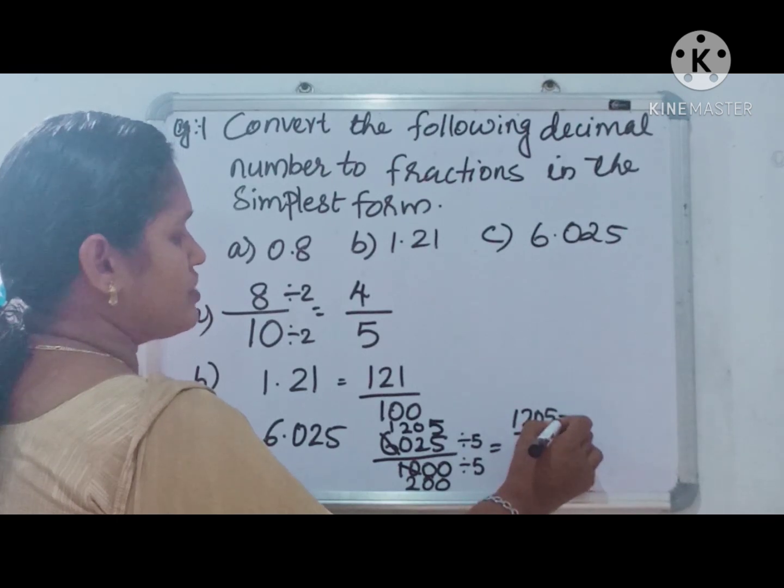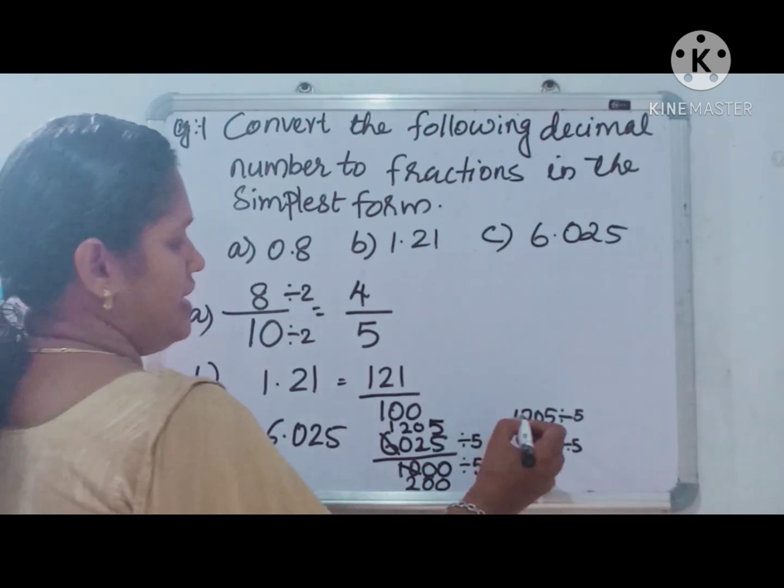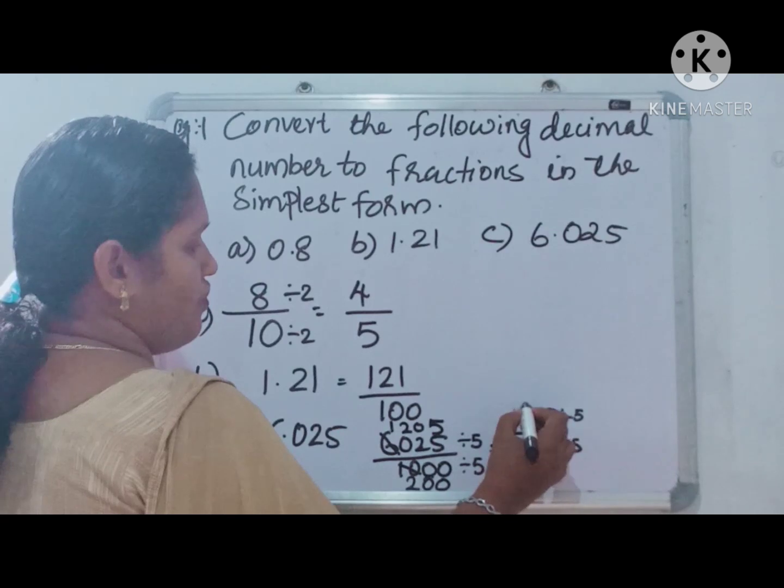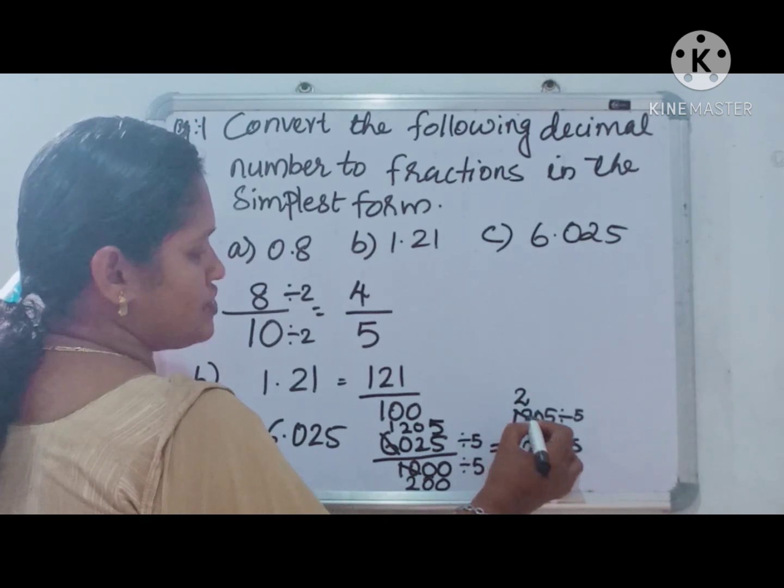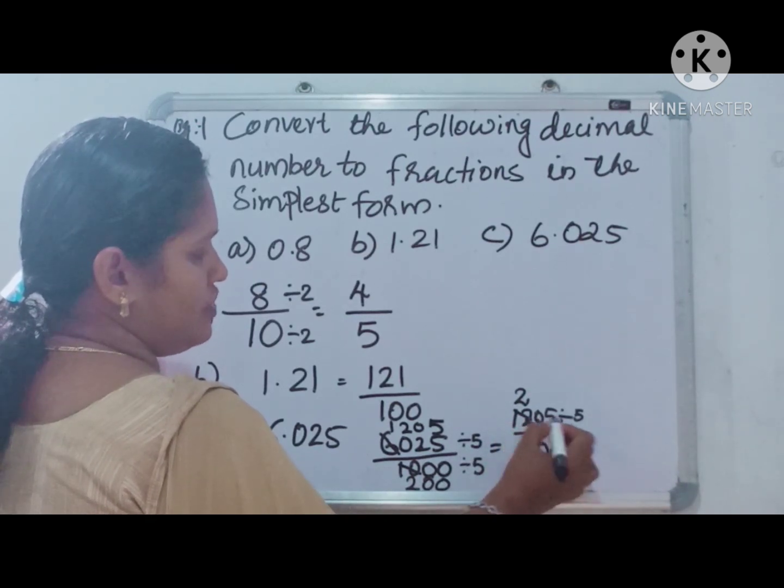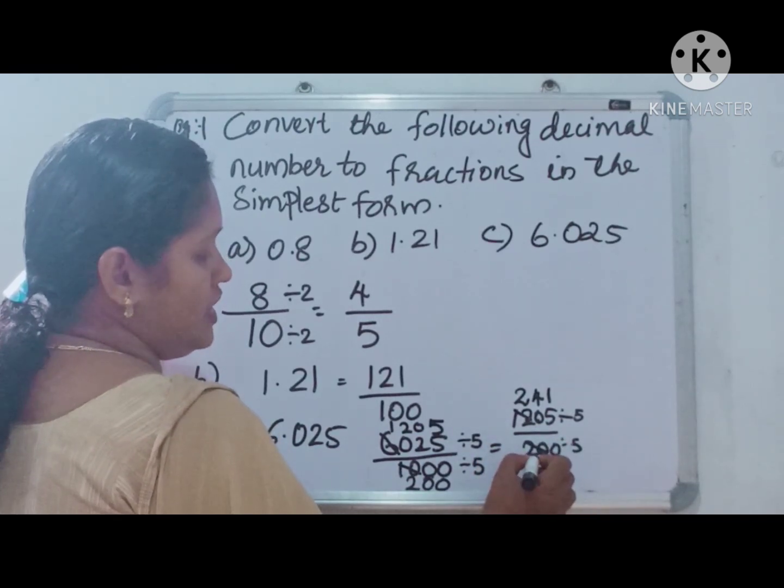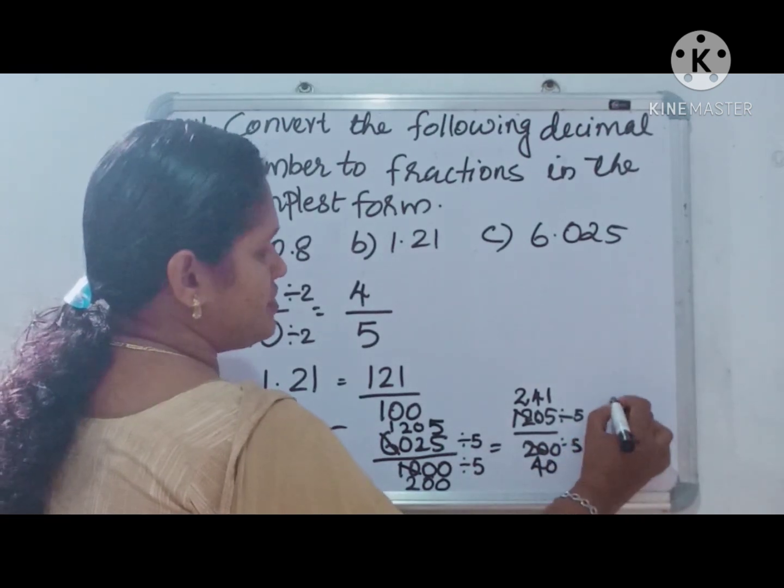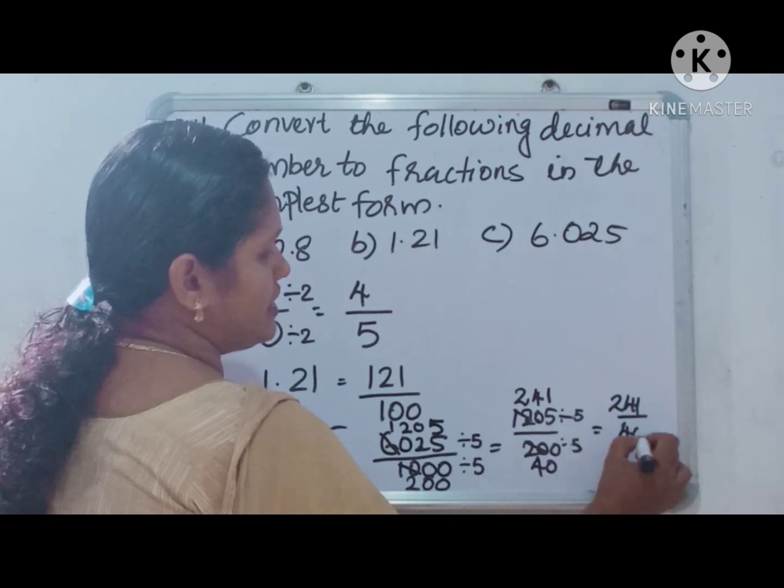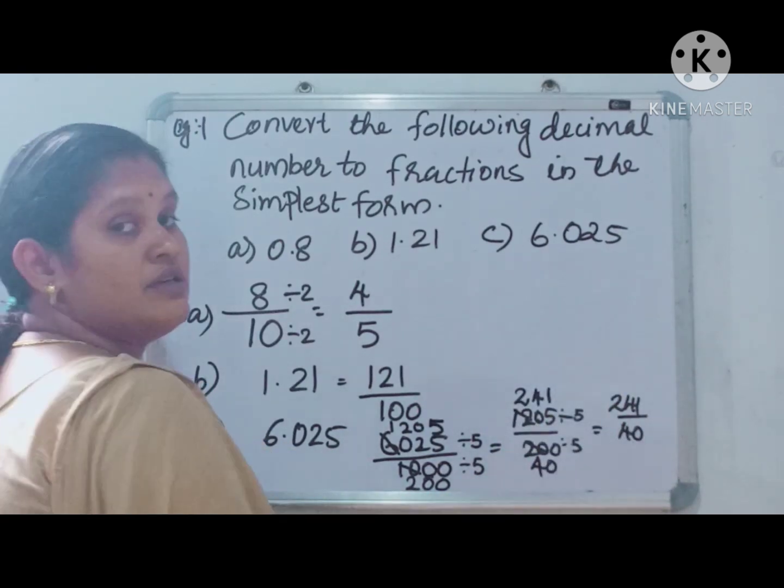Again, both sides are divisible by 5. In 12, 2 fives are 10. In 20, here balance is 2, 0 becomes 20. In 20, 4 times 5s are there. In 5, 1 time. In 200, in 20, 4 times and 0. The simplest form is 241 by 40. There is no common factor in 241 and 40.